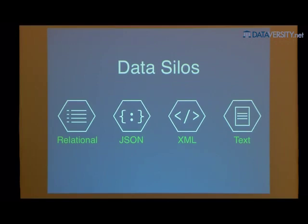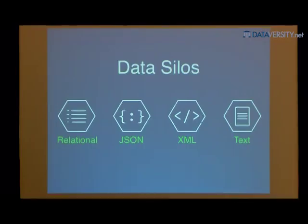Those data formats are either completely relational tables — completely structured — JSON documents, which are hierarchical and flexible, XML, which is a semi-structured format, or completely down to unstructured text.